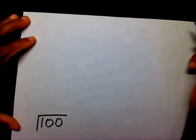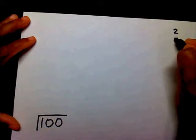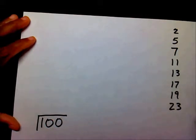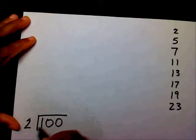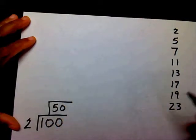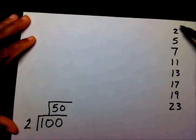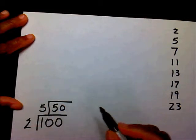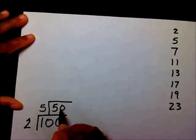One last one — let's try 100. Again, we want to focus on our prime numbers: 2, 5, 7, 11, 13, 17, 19, and 23. Starting at the top: will 2 go into 100 evenly? Yes, it will. 2 times what will give you 100? That's 50. Which one of these numbers will go into 50 evenly? I know 2 will go in, but let's use 5 this time. 5 times what will give you 50? That's 10 times.